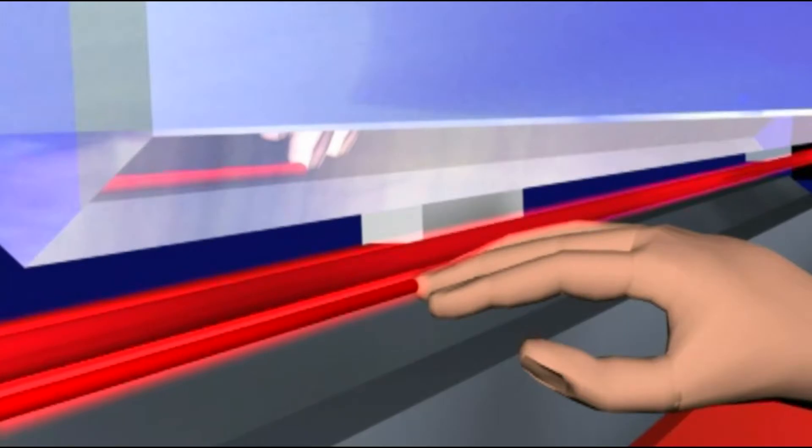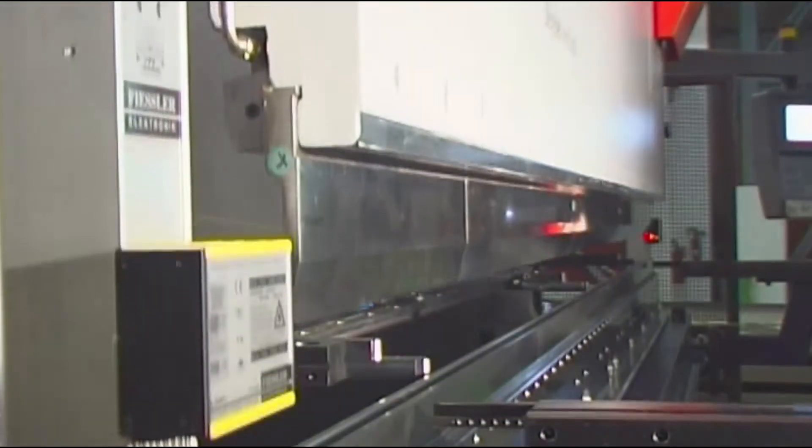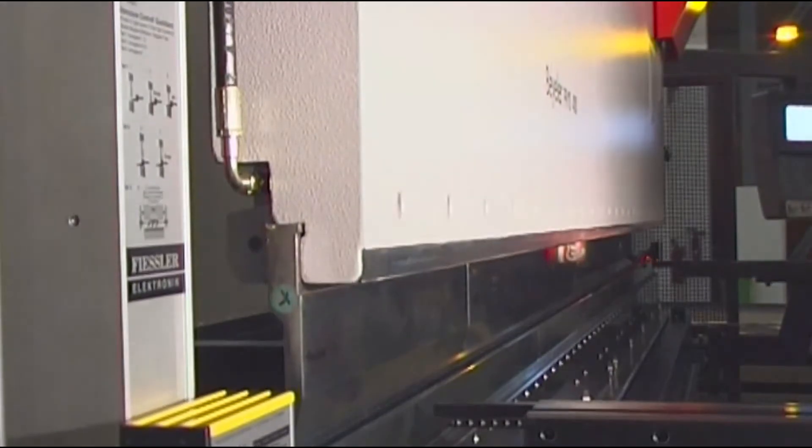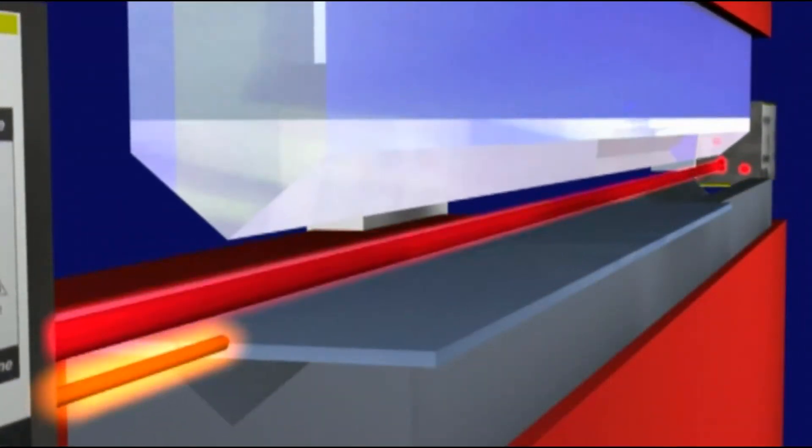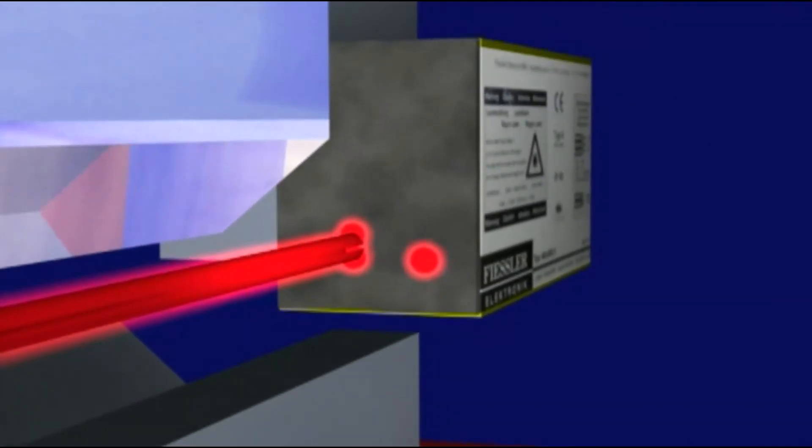If however there is no danger, then the descent of the tool will be slowed to the normal working speed. At this changeover point, both receiver elements will be muted, that is bridged, so that even though the laser beams are interrupted, the machine will not be stopped.